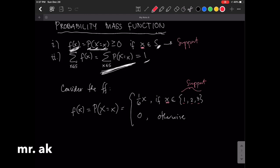If x is not in the support, the probability is 0. That's what we mean by otherwise. Otherwise means that the value x is not in the support, and the probability of that is 0.